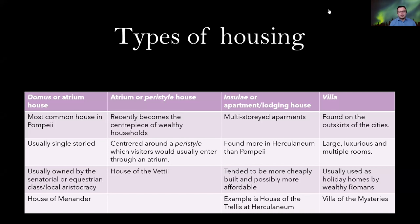Let's go through the types of house. When looking at Roman housing, we typically have four during this period: the domus or atrium house, the atrium or peristyle house, the insulae or apartment/lodging house, and the villa.